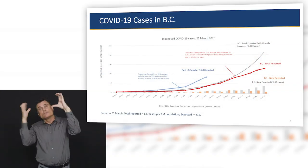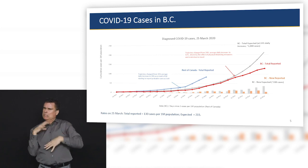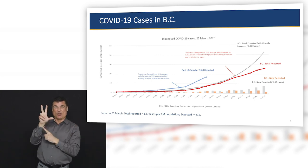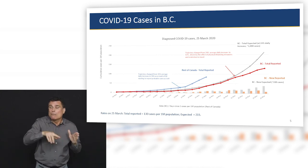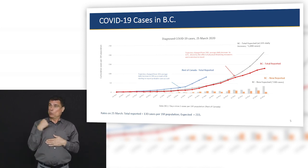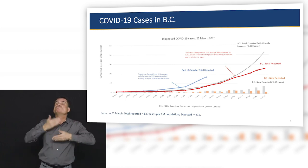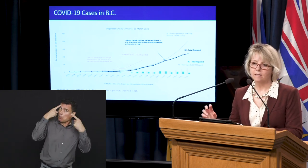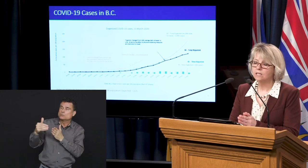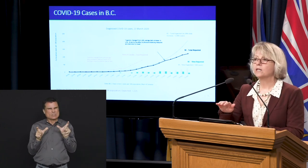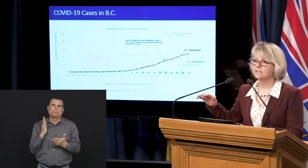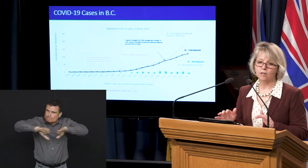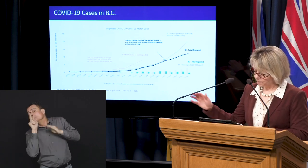With our reported cases, we're at about 130 cases per million population. If we had continued on the same trajectory we were on March 14th, we would have expected about 215 cases per million. So we think we've reduced that quite dramatically. What we need is for everybody to continue paying attention to these measures so we can continue to prevent transmission in our communities and stop those chains of transmission in all settings for the coming weeks.